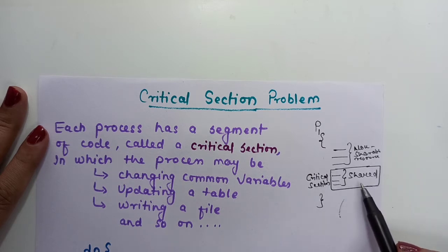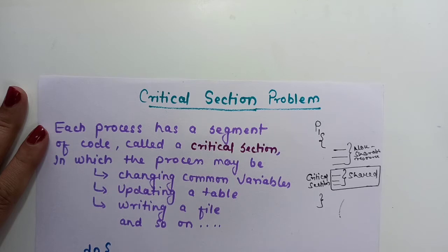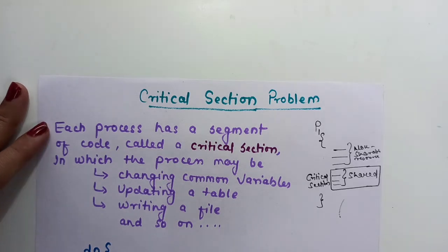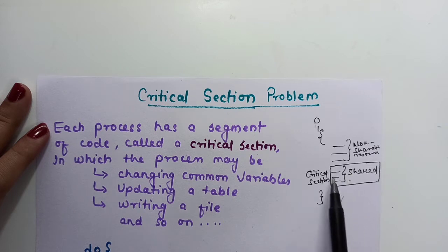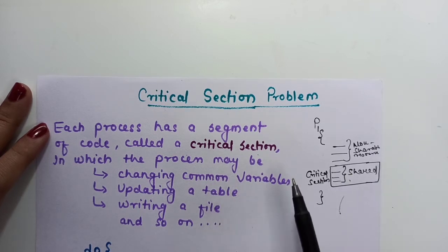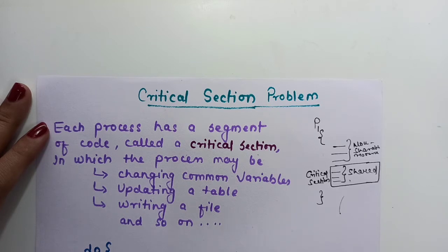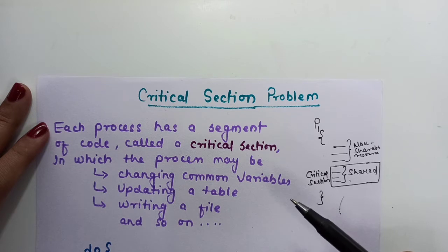In this video we will understand what the critical section is, how we solve the critical section problem, and what are the different criteria or properties that any algorithm solving this problem must satisfy. Each process has a segment of code called a critical section, in which the process may be changing common variables, updating a table, writing a file, or accessing any shared resource with its cooperating processes. That portion of the code is called the critical section.